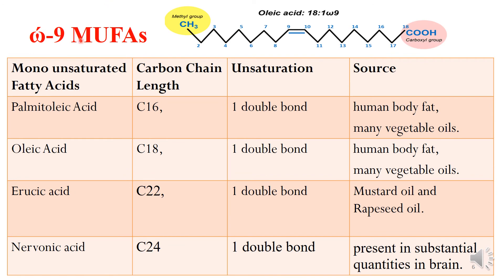Now we come to the omega-9 family, that is the monounsaturated fatty acids. In this, the first double bond occurs at the ninth carbon from the methyl end, and it has only one double bond — that is monounsaturated fatty acids — and that is why it belongs to the omega-9 family.